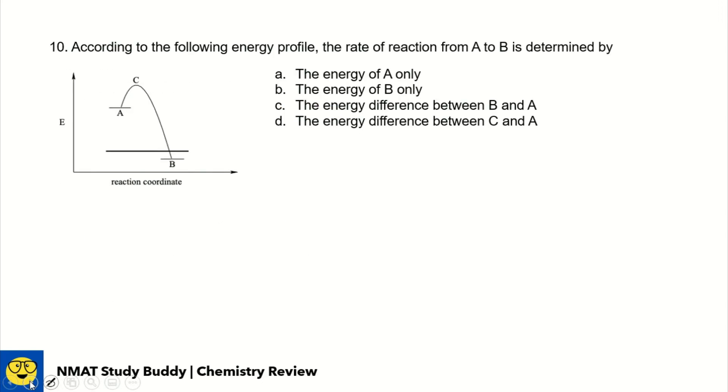Number 9, why is carbon considered a unique element? The answer is letter B. To a greater extent than any other element, carbon can bond to itself to form straight chains, branch chains, and rings. This property is called catenation. Only carbon can do this - create chains of its own atom repeatedly. Without this, there would be no life, no biomolecules, no organic compounds, no life in the universe. Number 10, according to this energy profile, the rate of reaction from A to B is determined by the activation energy, which is the distance of the energy level of our reactant A toward our transition state, the energy difference between C and A.